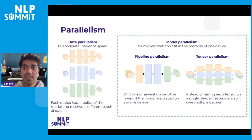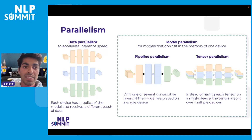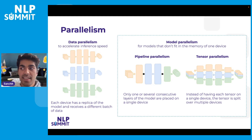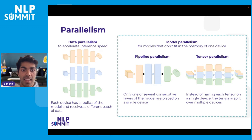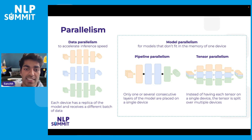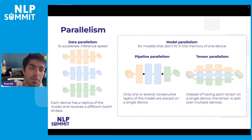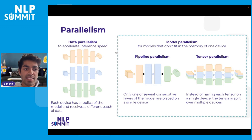In circumstances where a model cannot fit onto one device, we have to employ a form of model parallelism. Rather than limiting ourselves to one device, we can take multiple accelerator devices — such as multiple TPU cores — and parallelize our model across them. This circumvents the out-of-memory issue as we combine the collective memory of our hardware devices.